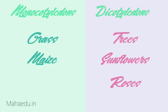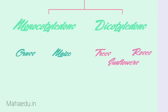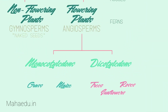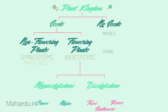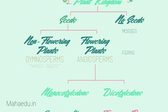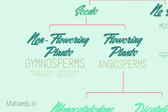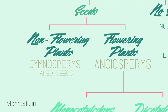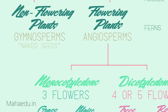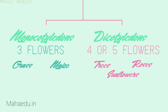So there we have some of the ways plants are classified. Remember that non-flowering plants are called gymnosperms and have naked seeds, and that flowering plants are called angiosperms, which can be separated into monocots and dicots.